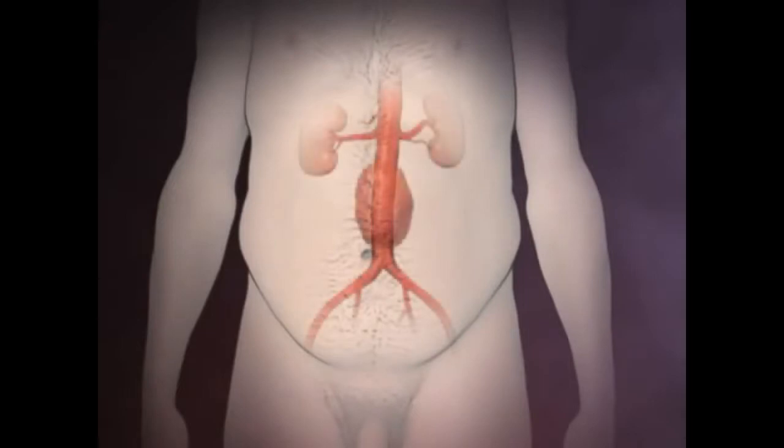Abdominal aortic aneurysm is a potentially life-threatening condition characterized by degenerative changes in the wall of the abdominal aorta that lead to progressive dilatation and possible rupture if the condition is untreated.